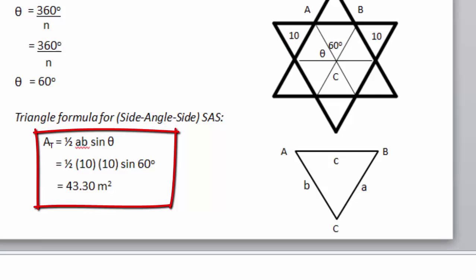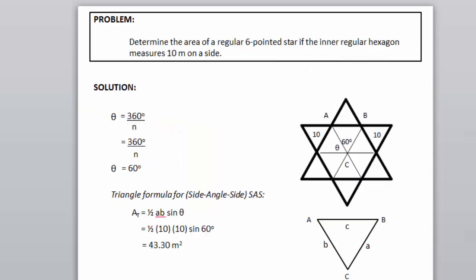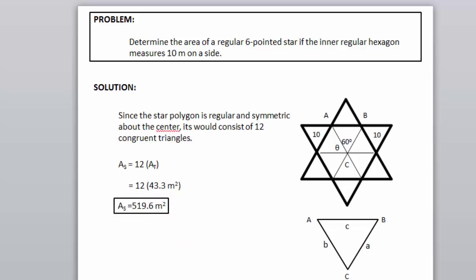Since we are solving for the total area of the regular 6-pointed star, consisting of 12 congruent triangles, to solve for the total area of that star.